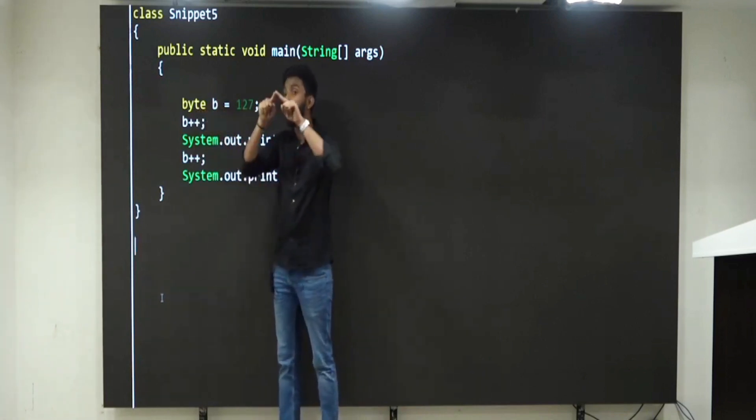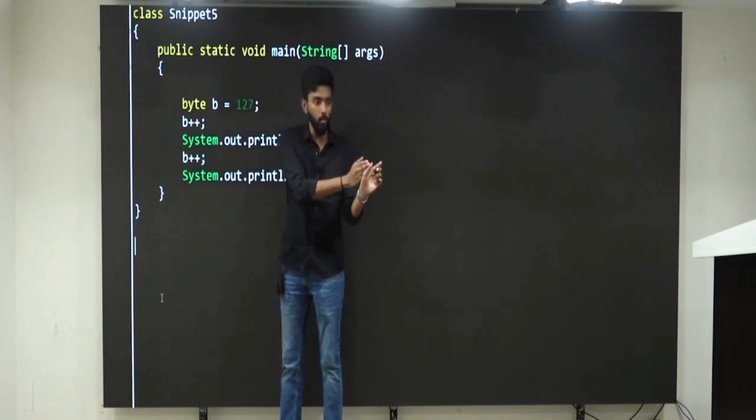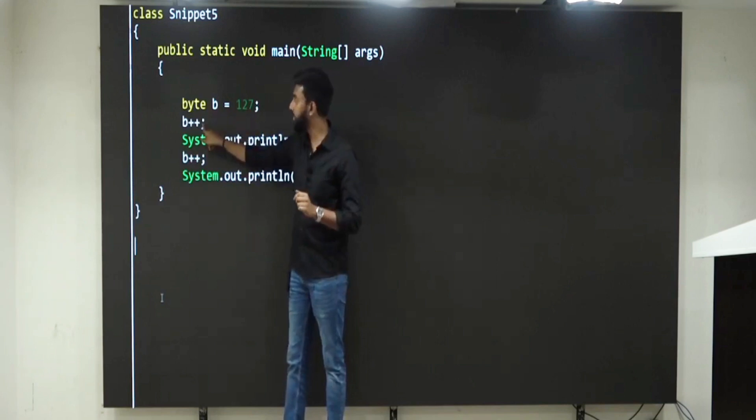Tell me, what is the range of byte? Minus 128 minimum value, maximum 127. Correct, I can store 127, no problem. Next line,